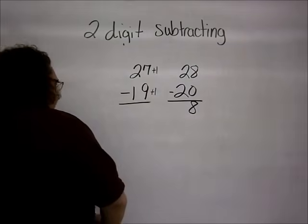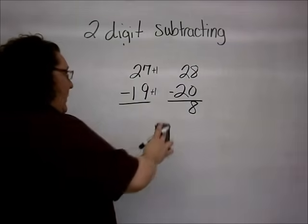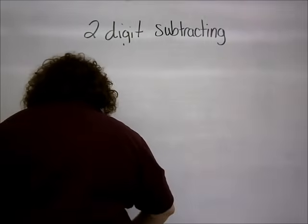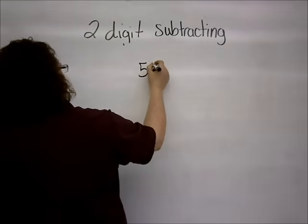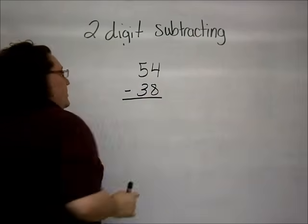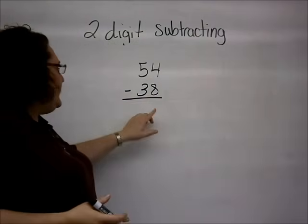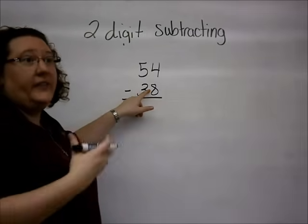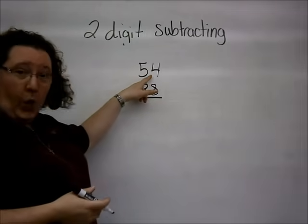Let's take a look at another example. And again, we will show it both ways. So, in our traditional method, we take a look at the bottom number in the 1's place. The 8 here is bigger than the 4.